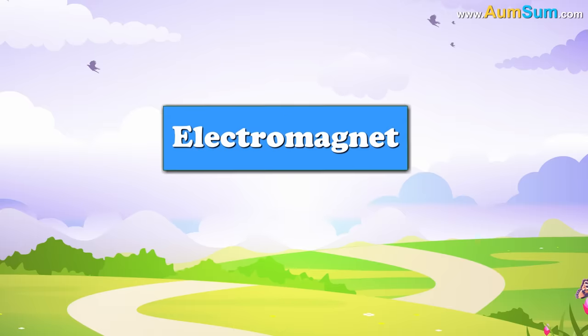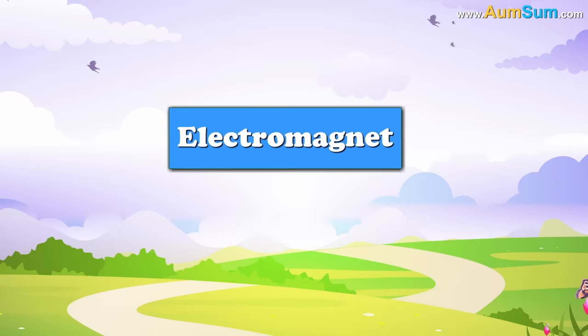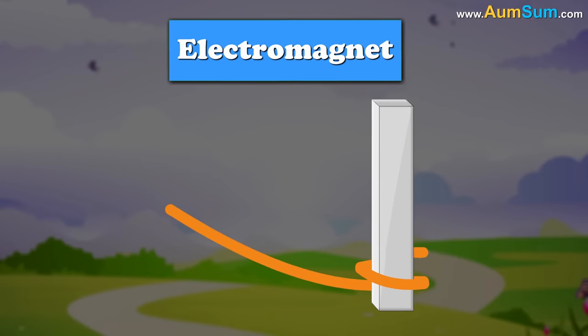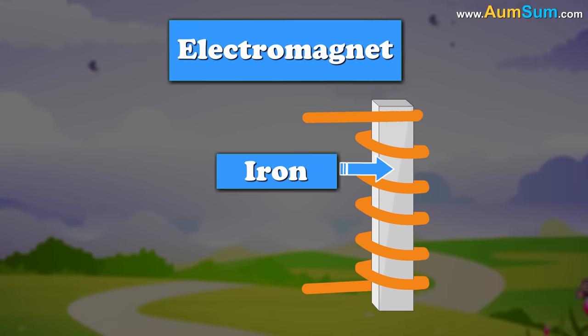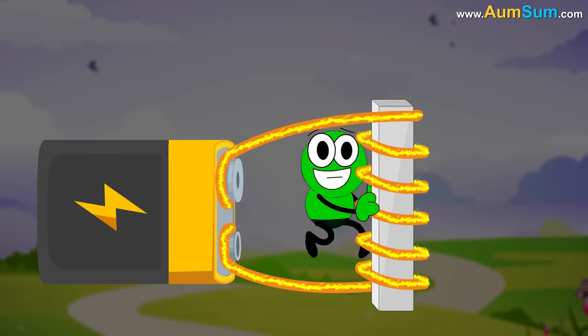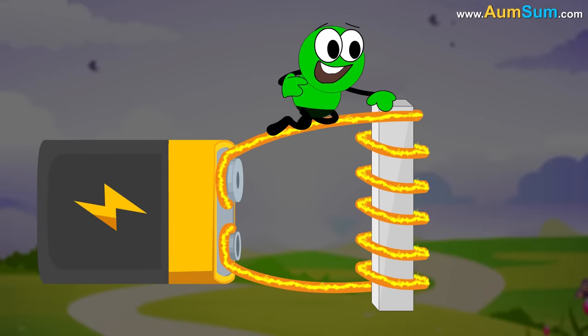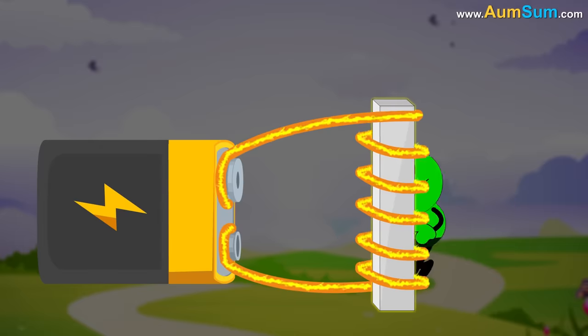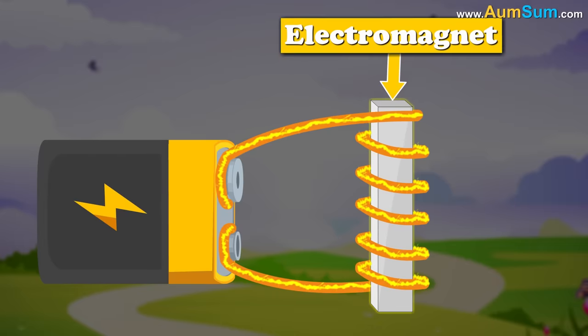The construction of an electromagnet is very simple. A conductive wire, usually made of copper, is wrapped around a piece of metal. In this case, iron. Now with the help of a battery, a current is introduced. This current starts flowing through the coiled wire, resulting in the creation of a magnetic field. This magnetic field magnetizes the iron metal, thus resulting in the creation of an electromagnet.